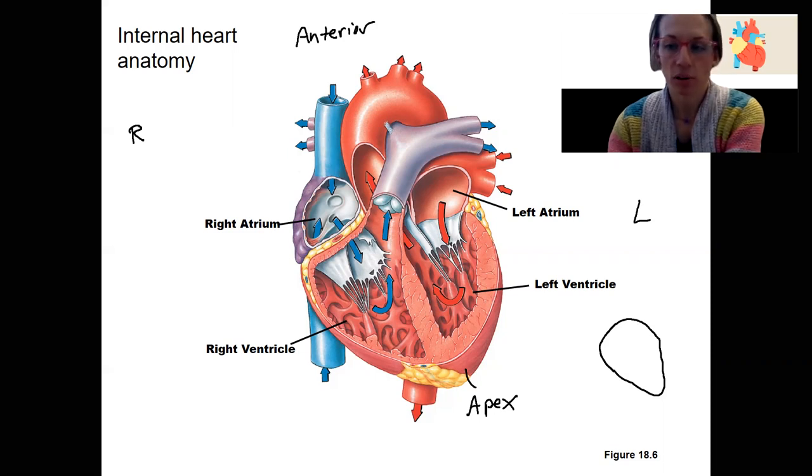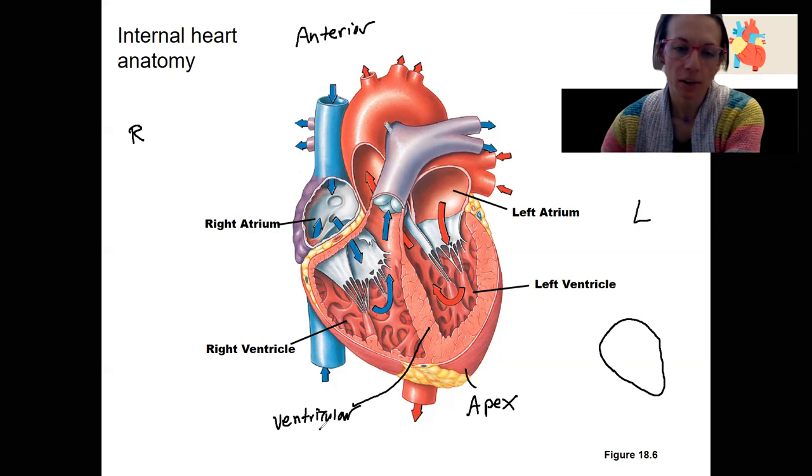Separating all of these chambers, forming them are called septum, septa. So here is a ventricular septum. The atrial septum is kind of hidden up there.